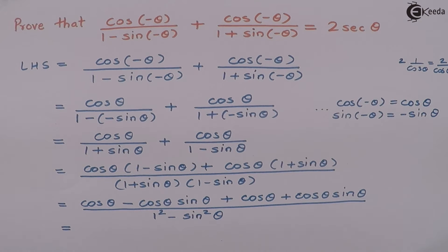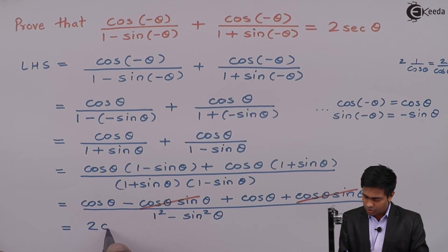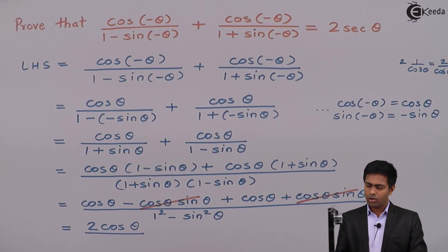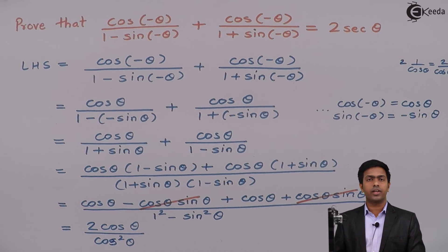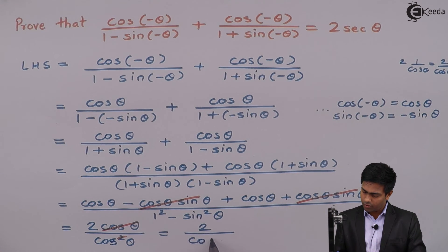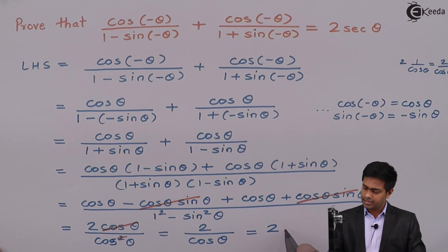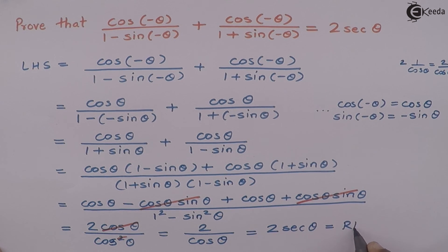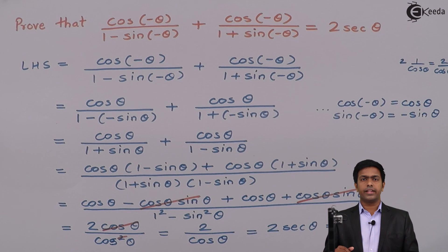We can cancel the positive cos θ sin θ and the negative cos θ sin θ, so we get 2 cos θ / (1 - sin²θ). Now 1 - sin²θ = cos²θ, so we get 2 cos θ / cos²θ. Cancelling cos from numerator and denominator gives 2/cos θ, and 1/cos θ is sec θ, so we get 2 sec θ, which is the right hand side. Thus, by using the different formulas of trigonometric ratios, we have proved the above result. Thank you.